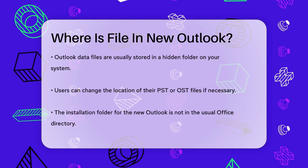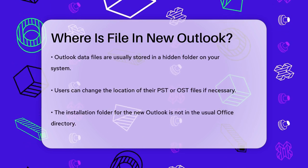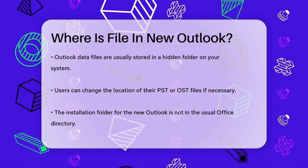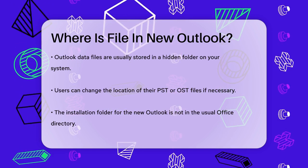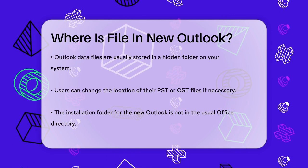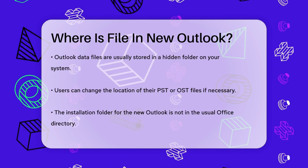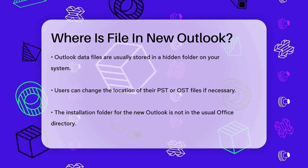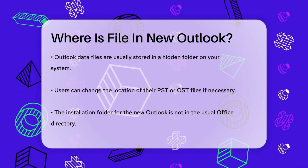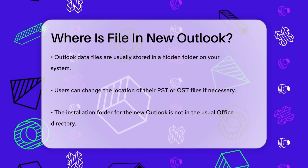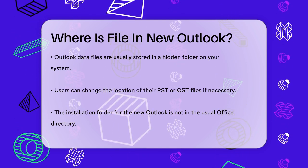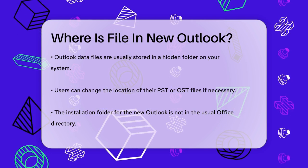If you're looking for specific files related to your Outlook data, such as PST or OST files, you'll need to navigate through your file system. For POP email accounts, your data is stored in PST files, while IMAP accounts use OST files. These files are typically located in a hidden folder, but you can change their location if needed.